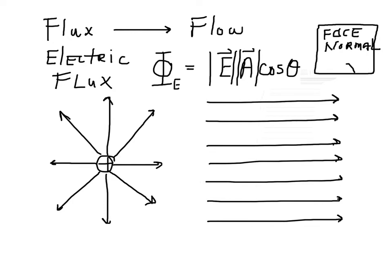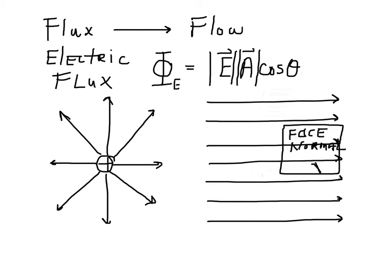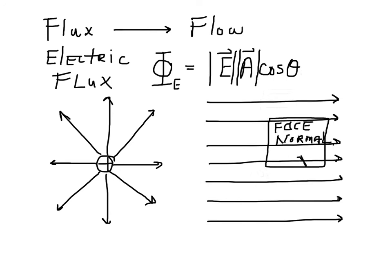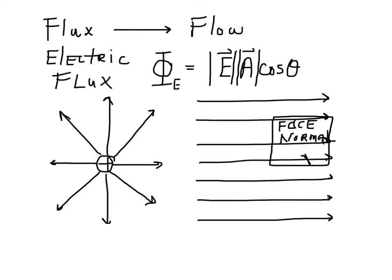Going back to the sunlight example: how much radiation a solar cell receives depends on the area, the intensity of the sunlight, and its orientation. Clearly, if you want maximum solar flux onto the solar cell, you turn it so it's facing into the sun — at an angle of either zero or 180 degrees to the direction of the sunlight.